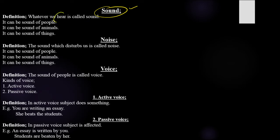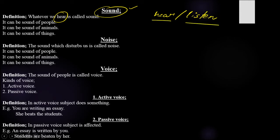Whatever passes through our ear is known as sound. We will try to understand the meaning of 'hear' and 'listen.' In British English, 'hear' refers to a sound which passes from your ear, while 'listen' means you are hearing and also understanding.